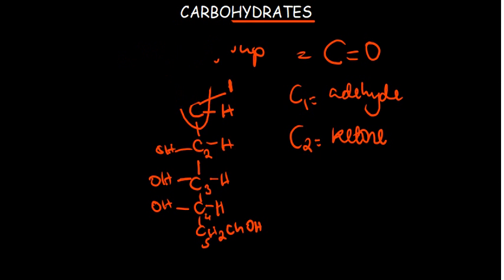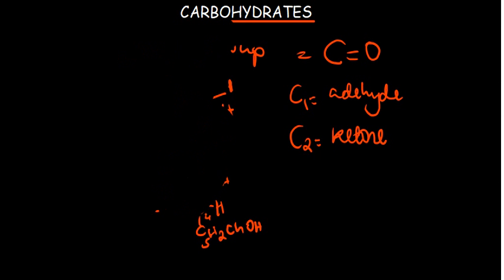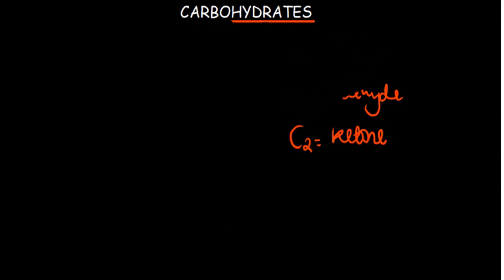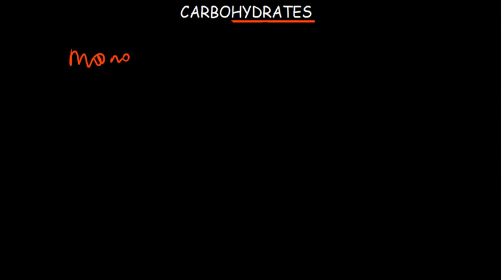Aldehydes and ketones are the functional groups of all carbohydrates. Having said that, we also look at the different classes found in carbohydrates: we have monosaccharides, disaccharides, polysaccharides, and also oligosaccharides.